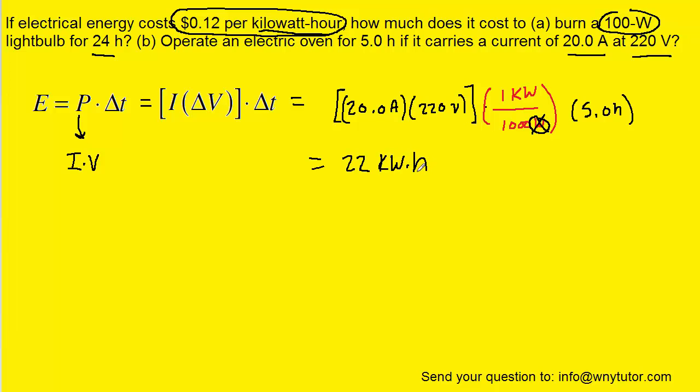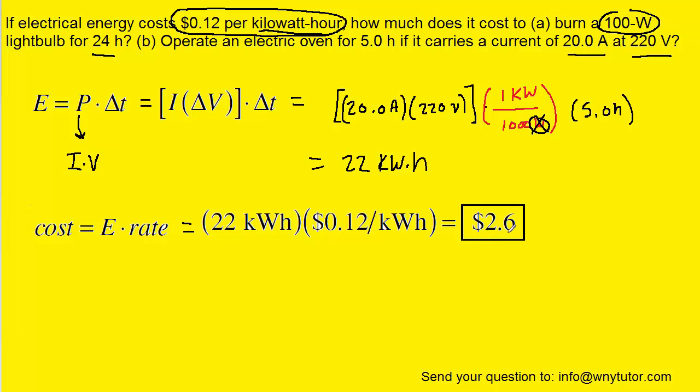Now we can move on to calculating the cost. As before, the cost is equal to the amount of energy times the rate. We'll take this amount of energy and multiply it by the same rate from before. When we do that, we get a value equal to $2.60. So this would be the correct answer to part B.